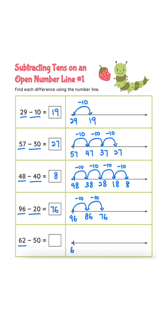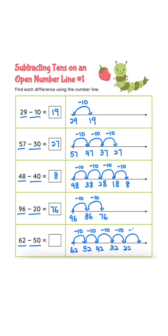62 minus 50. 62 minus 10 is 52. 52 minus 10 is 42. 42 minus 10 is 32. 32 minus 10 is 22. 22 minus 10 is 12. Answer is 12.